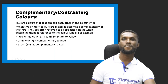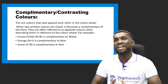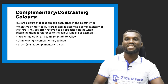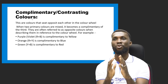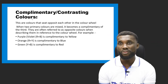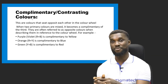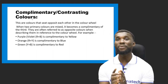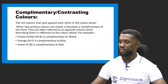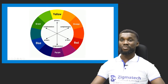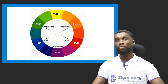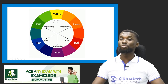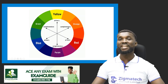Now let's look at the complementary color, also called contrasting color. These are colors that sit opposite each other in the color wheel. They are often referred to as opposite colors when describing them in reference to the color wheel. For example: purple (violet) is complementary to yellow; orange, which is a mix of red and yellow, is complementary to blue; and green is complementary to red. Try as much as possible to differentiate between each and every one of them.